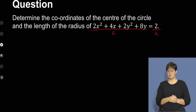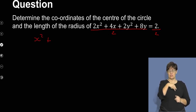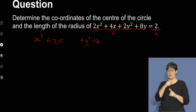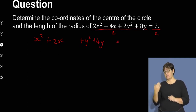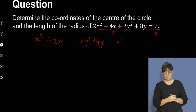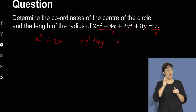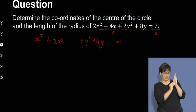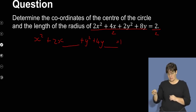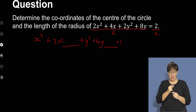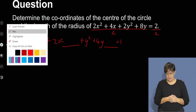Once I divide by 2, I split up the terms: the first term divided by 2 gives x squared, the second term gives 2x, then y squared plus 4y, and on the right I get 1. I've left space so that in the next step I can complete the square — make sure you leave space for yourself so everything fits in neatly.